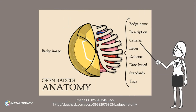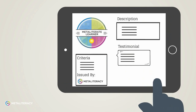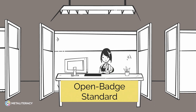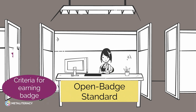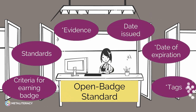Digital badges have metadata that is baked in to the badge image. They are considered portable credentials because this data is maintained no matter where the badge is displayed. When an observer, such as a potential employer or admissions officer, clicks on the badge image, they can see detailed information about how the badge was earned. The Open Badge Standard, or OBI, was established in 2012 to standardize the metadata included in open badges. This metadata includes the criteria for earning the badge, standards, evidence, the date issued, the date of expiration, and tags.